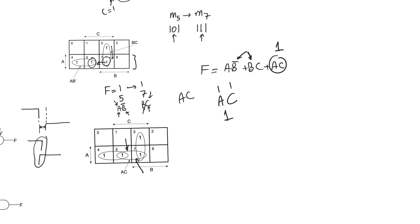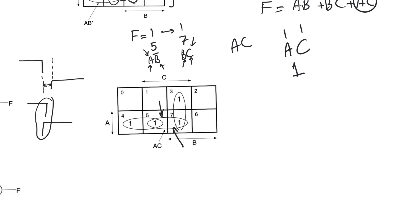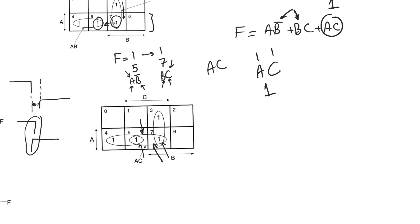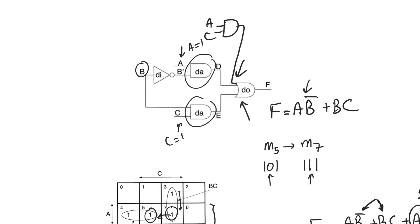But does this change the logic function? No, because it is a redundant term. A and C are going to be equal to one simultaneously only for minterms five and seven, which are already minterms where the logic function is supposed to be one. So we are relying on A and C being one to maintain a value of one here regardless of the transition that B and B-bar make. We can be sure A and C are one because B and B-bar cannot propagate to D and E unless C and A are both one. If either C or A is not one, there is no risk of glitching anyway, as we would be talking about other minterms on the K-map.